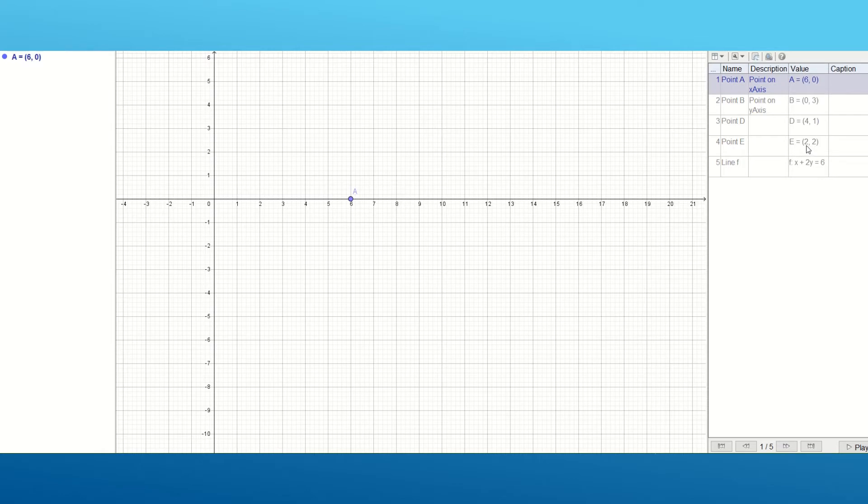The first point which is plotted is here. Then this one is plotted, you can see. Then D is plotted, then E. After that, the line passing through these points - and you can see this line's equation is clearly x plus 2y equals 6, which was your equation.